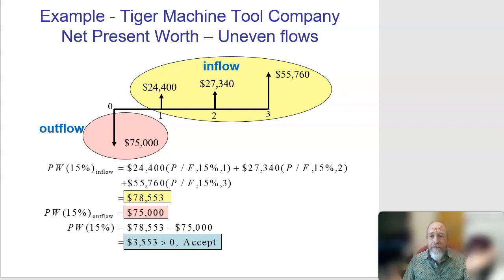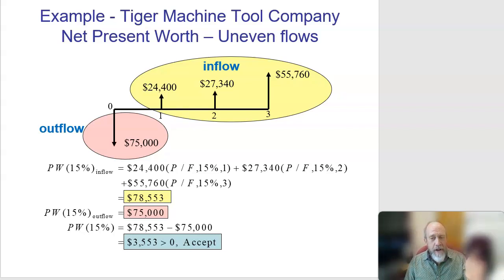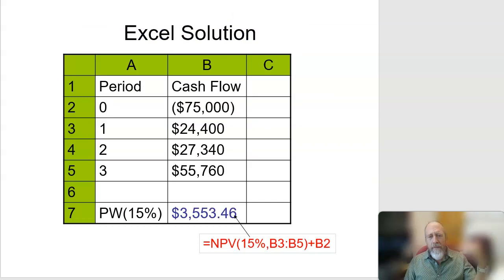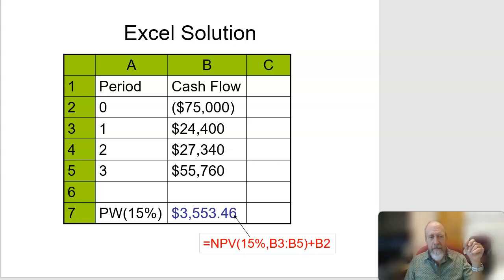Everything is keyed upon that interest rate and the estimations of what those inflows are going to be. The outflow is often easy to figure out — it's what it's going to cost to do the project up front. Those inflows might be more difficult to calculate. In Excel, it's straightforward: get the net present value of the pieces, time-adjusted to present worth.